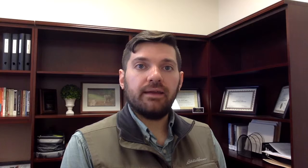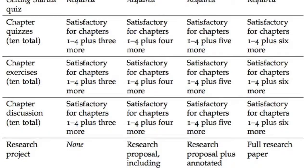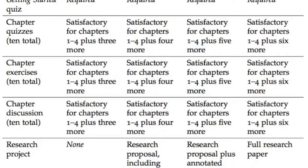Each graded assignment has specific criteria you must meet in order to earn credit for satisfactorily completing the assignment. In order to earn a certain final letter grade, you must satisfactorily complete a certain number of each type of assignment—quizzes, exercises, discussion forums, and portions of the optional research project. You must satisfactorily complete all assignments from the first four chapters in order to pass this course.